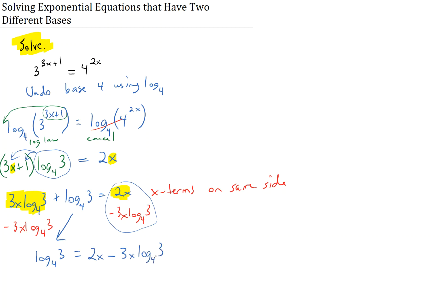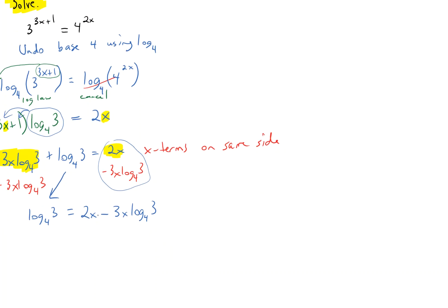What that leaves me on the left is just my log base 4 of 3. And on the right, these guys aren't like terms. So, I've got 2x minus this big term 3x log base 4 of 3. So, unfortunately, I can't combine those, but at least my x's are on the same side. And this is the tricky part. Now, what you want to do, since you're trying to solve for x, factor out the common x. Can't emphasize enough. That's what everybody forgets to do. So, on the right side, I'll pull x out and it's going to leave behind a 2 here minus the 3 times log base 4 of 3 there.